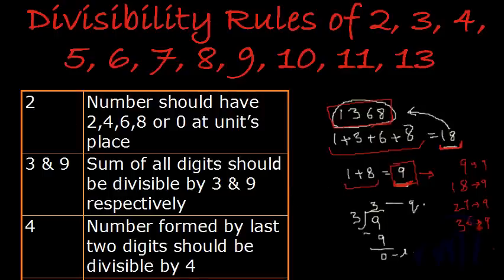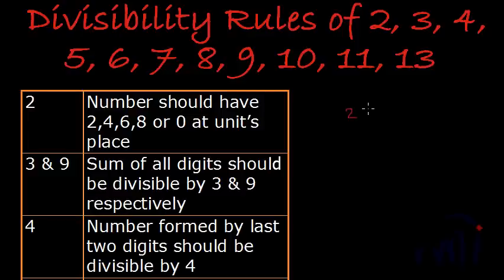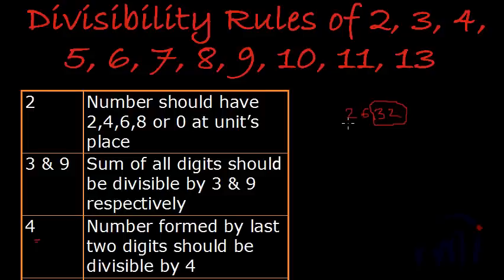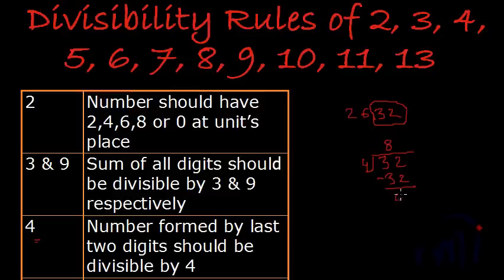Then we have the divisibility rule of 4. If I take a number like 2632, divisibility rule of 4 says the number formed by the last two digits should be divisible by 4. According to this rule, if this 32 — which is the number formed by the last two digits — is divisible by 4, then 2632 can also be divisible by 4. 8 fours are 32, giving remainder as 0, so 32 is divisible by 4. That means 2632 will also be divisible by 4.